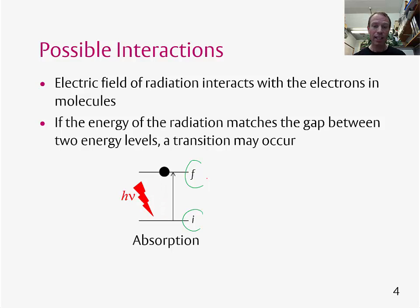Another thing that could happen is if we start off in an excited state, an excited initial state i, the system can then fall down to a final state f and emit light. So we've got two simple processes which can occur, absorption and emission.